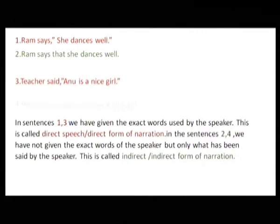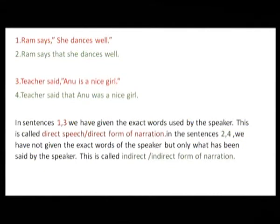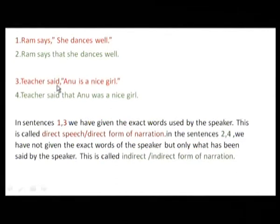Looking at sentence two and sentence four: teacher said that Anu was a nice girl. Notice here one more thing — the conjunction 'that' has been added, but also where 'Anu is' was before, 'is' has been changed into 'was'. This happened because the reporting verb outside was 'said' (past), while the first sentence used 'says' (present), so 'is' is changed into 'was'.